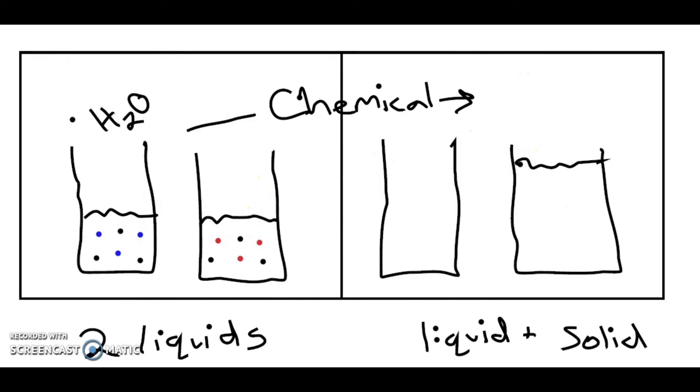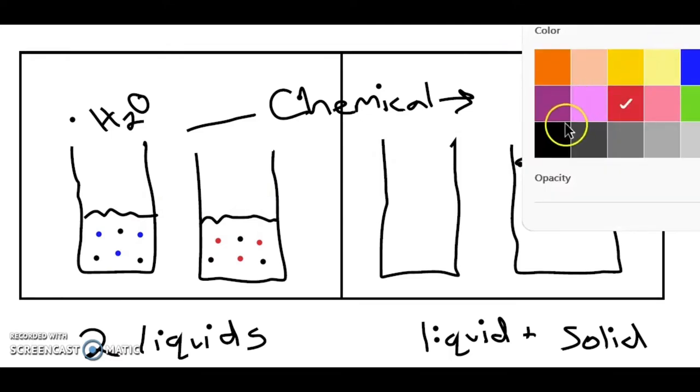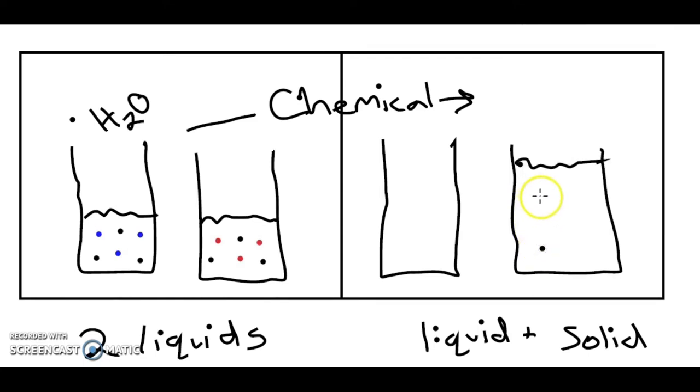Okay, so we mixed these two things together. We poured them together into one. Our water is still going to be water. Okay, we didn't change our water at all. So we still are going to have six dots of water now, right, because we combined the two together.